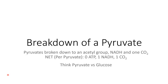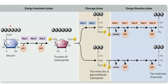Before we get into the second step, I want to remind you where we're coming from. We started off our entire cellular respiration process with glycolysis. When we began glycolysis, we started off with a six-carbon molecule of glucose. In our energy investment stage, we added two molecules of ATP, and we ended up with a separate six-carbon molecule. In the cleavage phase, we split that six-carbon molecule to get two three-carbon molecules. And then in the energy liberation phase,